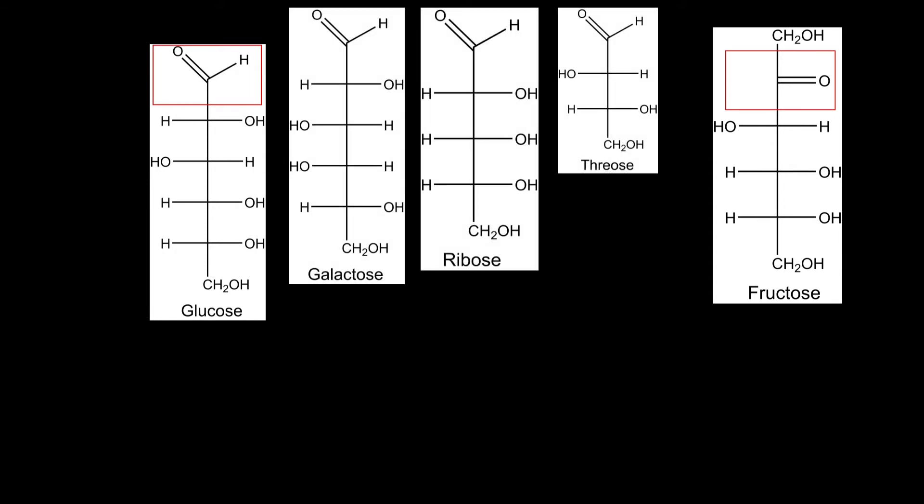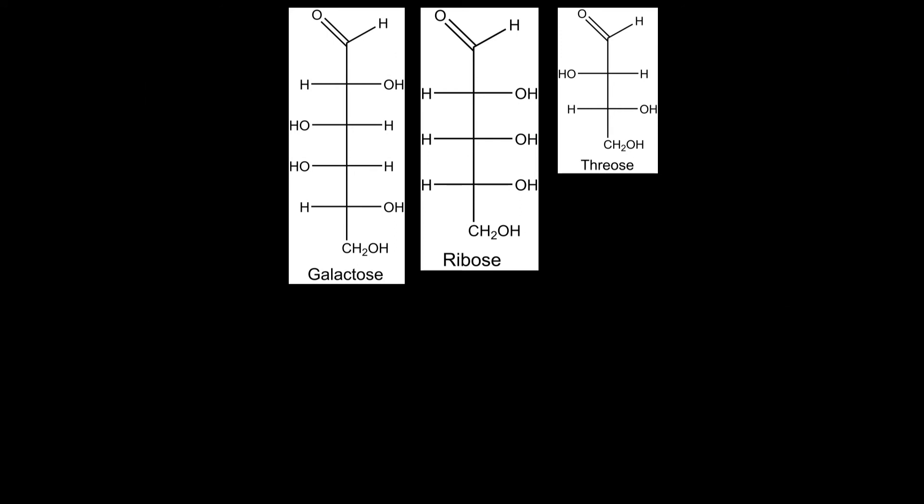In the Fischer projection all of the monosaccharides can be differentiated very precisely. These contain mainly between 3 and 6 carbon atoms, so they are called trioses, tetroses, pentoses, and hexoses. According to the functional group they are called for example aldohexoses or ketopentoses.